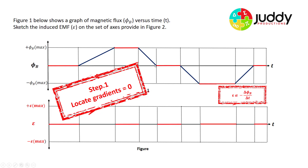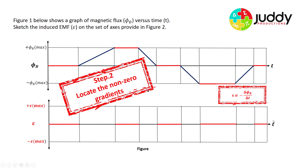The gradients of zero on the flux versus time graph represent EMFs of zero — step one complete. Step two: locate the non-zero gradients, highlighted in red. We have a constant positive gradient that will induce a constant negative EMF. Notice also that the change in flux in the remaining sections occurs over only half the time frame of the initial change in flux.